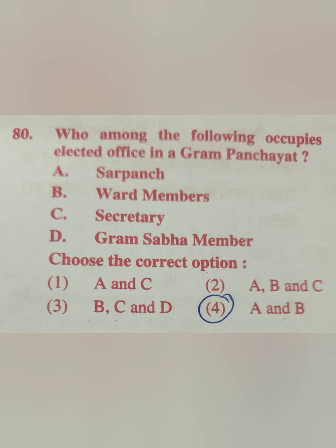Question 80: Who among the following occupies elected office in a gram panchayat? Options: sarpanch, ward member, secretary, gram sabha member. The correct answer is option 4 — A and B: sarpanch and ward member.